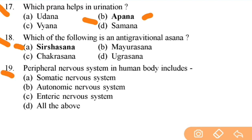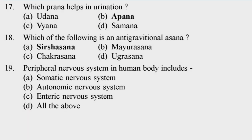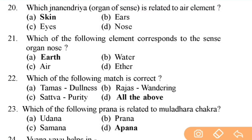Peripheral nervous system in the human body includes — check options — right answer is D. Next: which Jnanendriya — organ of sense — is related to the air element? Right answer is A — skin. Next: which of the following element corresponds to the sense organ nose? Important question — right answer is A — earth.